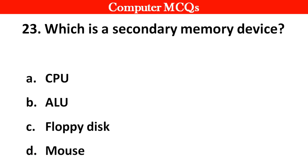Which is a secondary memory device? Option A CPU, B ALU, C floppy disk, D mouse. Right answer is option C, floppy disk.